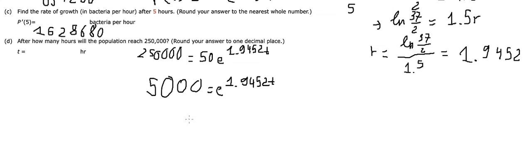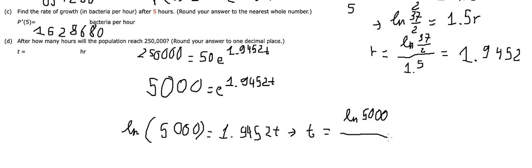Now we use the natural log for both sides. Because ln of e gives us the exponent, we can find t = ln(5000) divided by 1.9452.